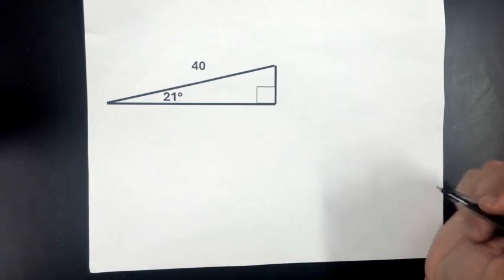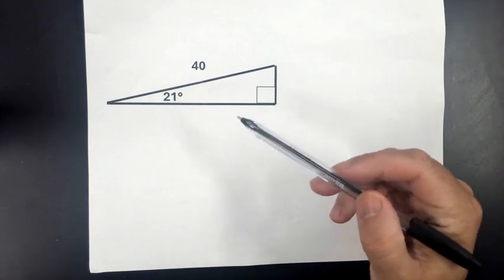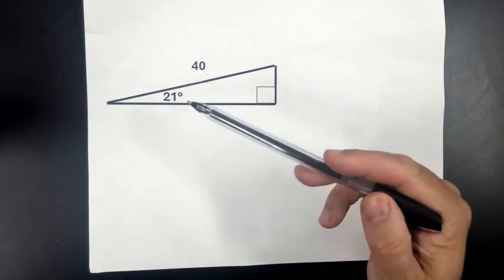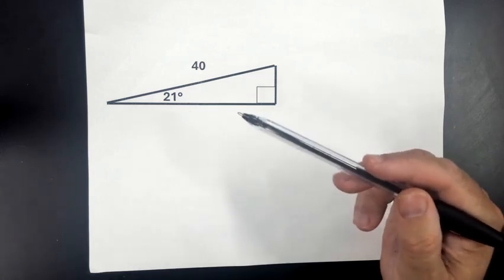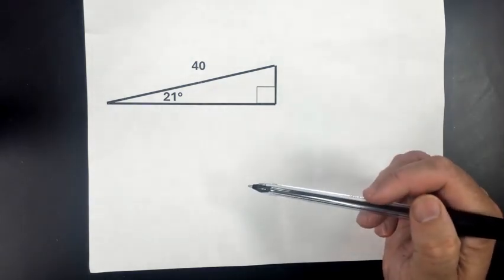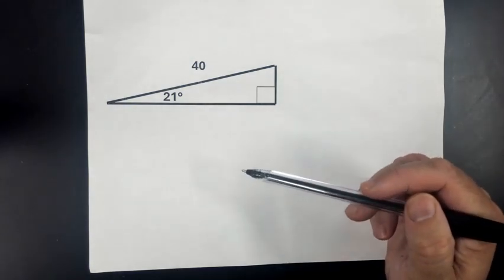Alright, what up everybody. We're going to be solving this problem where we know the hypotenuse of a right triangle and we know one of the angles. We're going to use sine, cosine, and tangent to find the other sides and also find the other angle. So we're going to solve for everything in five minutes or less.